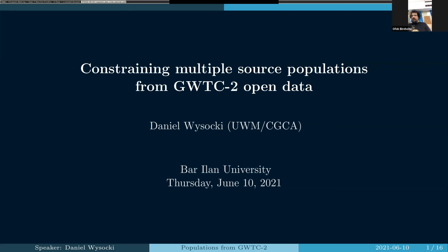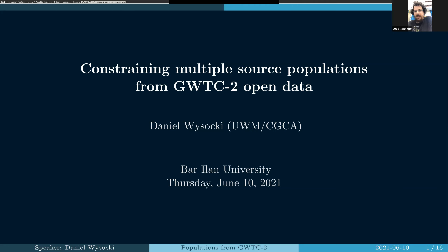Welcome everyone. We have with us today Dan Visokai from University of Wisconsin in Milwaukee, formerly a PhD student at Rochester Institute of Technology in New York. He'll tell us about constraining multiple source populations from the second gravitational wave transient catalog from LIGO. Good luck, go ahead.